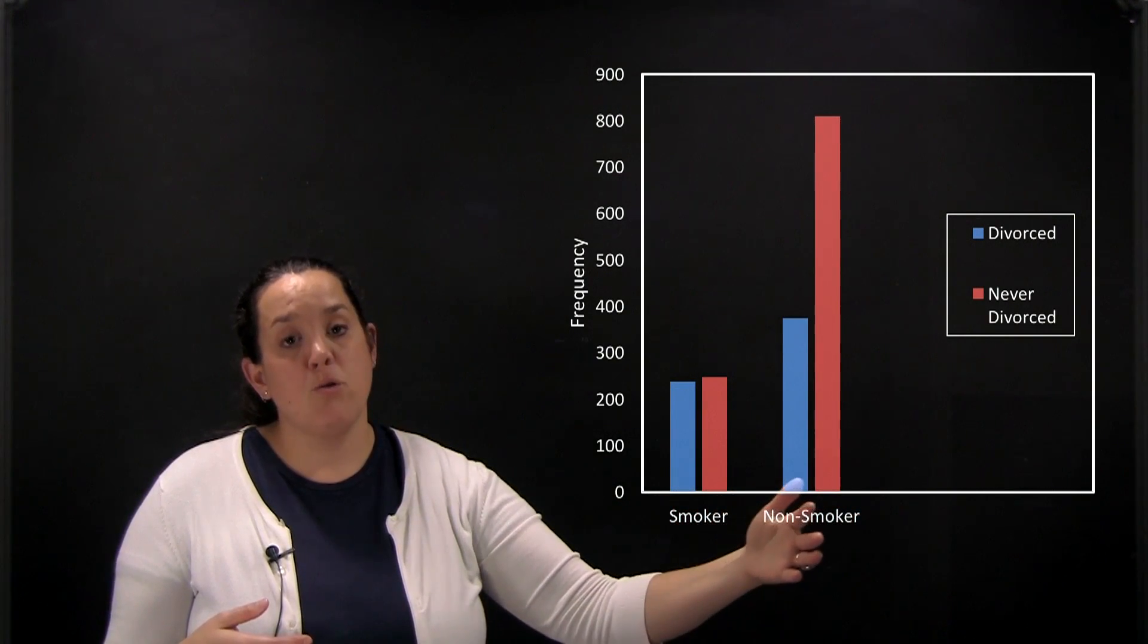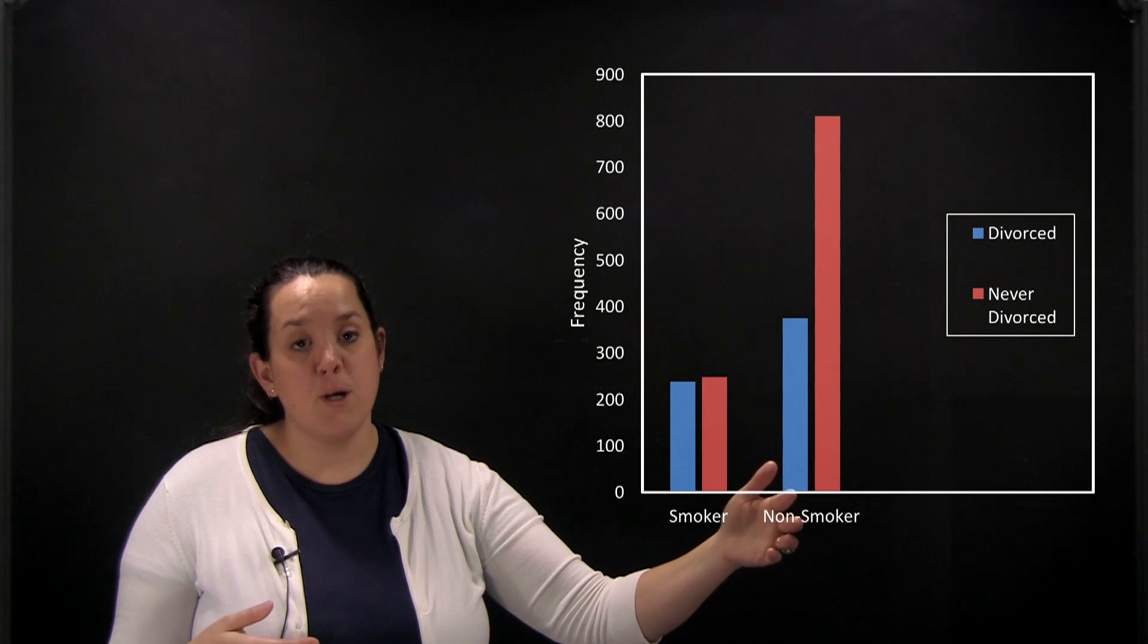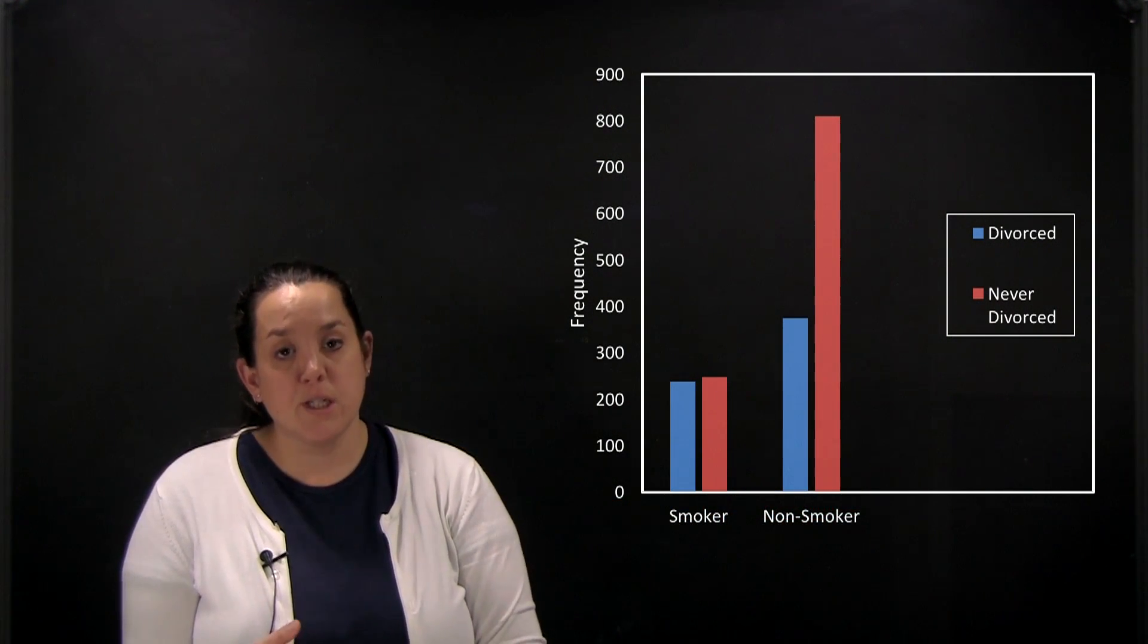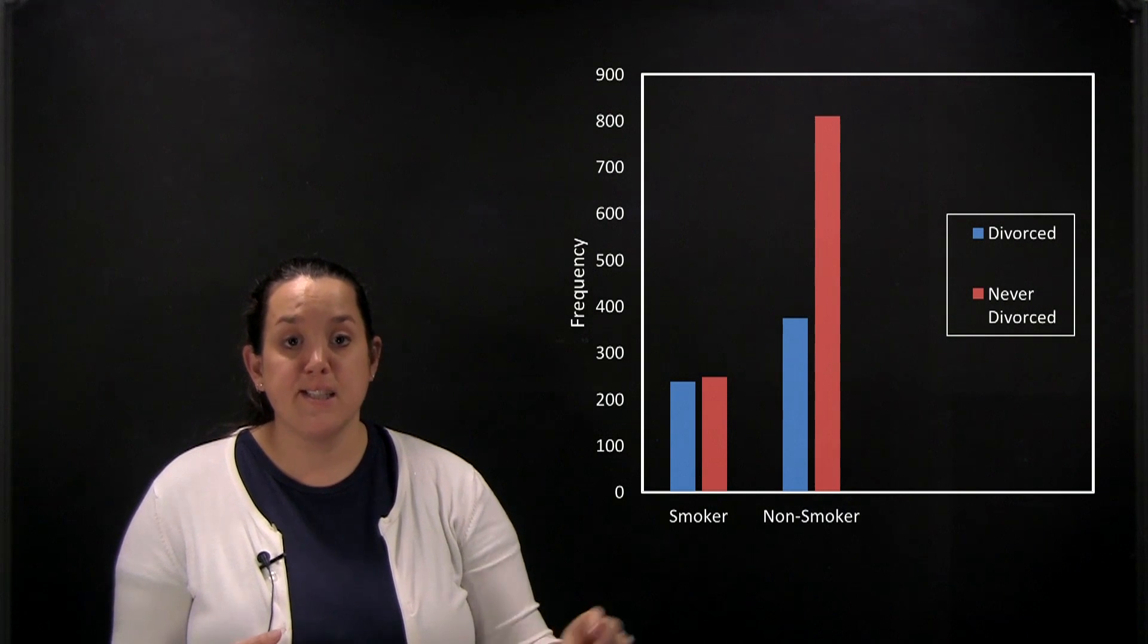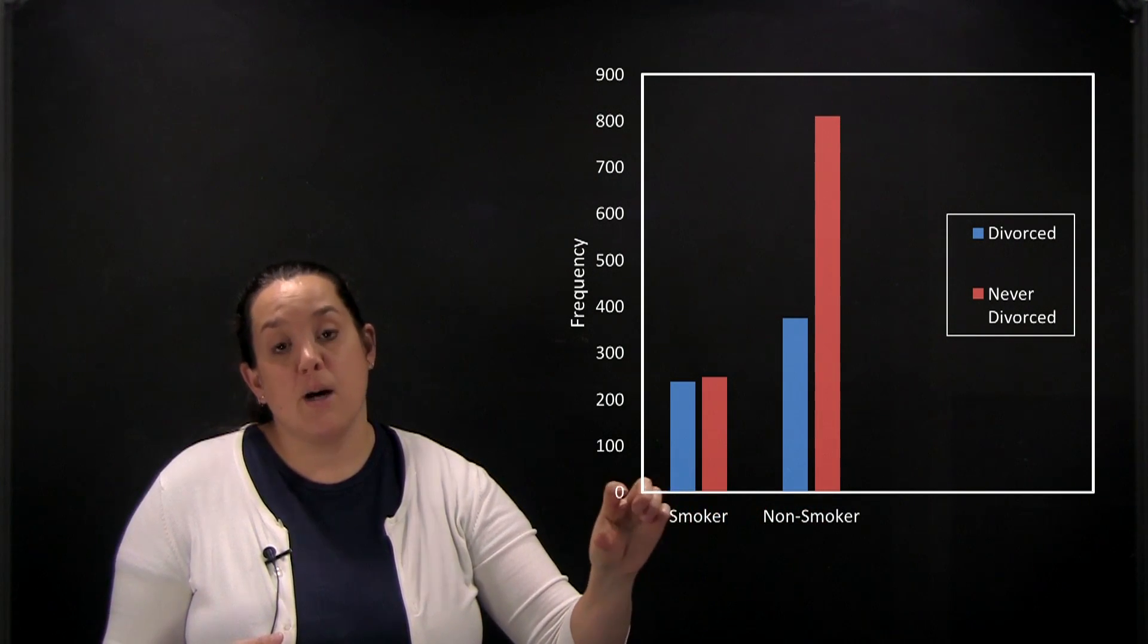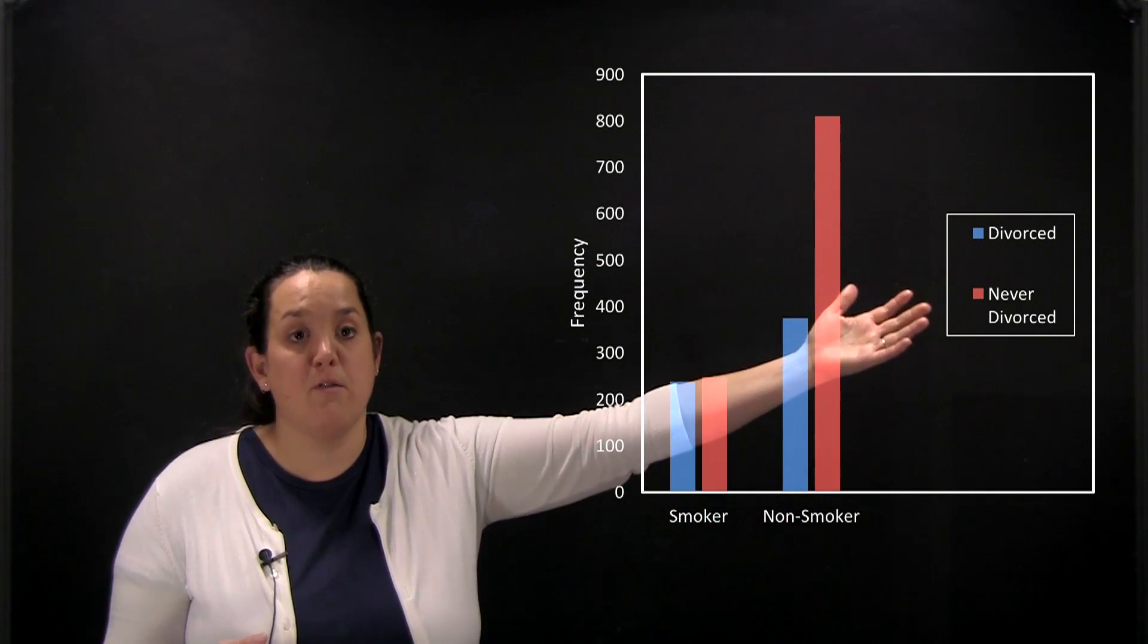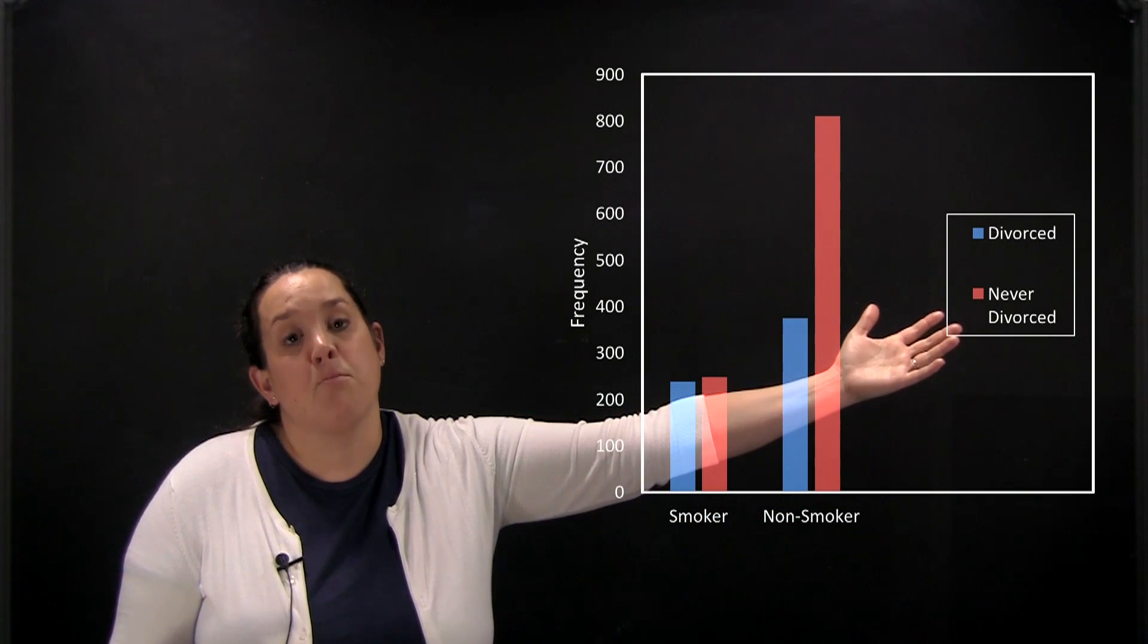Also in a bar graph, when you look at this type of grouping, it tends to be the case that the explanatory variable is going to be represented on the x-axis. So here it's saying that smoking status is going to explain the response variable which is ever having been divorced.